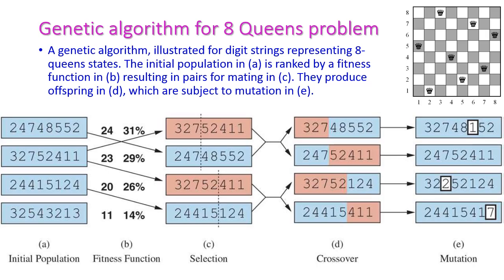Now let us solve the 8 queens problem using genetic algorithm. In the 8 queens problem, we have to place all 8 queens on a chess board so that no queen can attack another queen in a single move. We will apply the five different steps of genetic algorithm to get the solution.